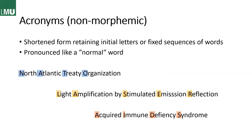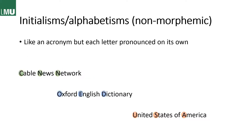Then we have acronyms, another non-morphemic word formation process. Acronyms are shortened forms which retain the initial letters or another fixed sequence of words, and what makes them acronyms is their pronunciation as if they were a normal word. Examples are NATO (North Atlantic Treaty Organization), laser (light amplification by stimulated emission of radiation), and AIDS (acquired immune deficiency syndrome). Similar to acronyms, we have initialisms or alphabetisms — like acronyms, but each letter is pronounced on its own: CNN (Cable News Network), the OED (Oxford English Dictionary), or the USA (United States of America).